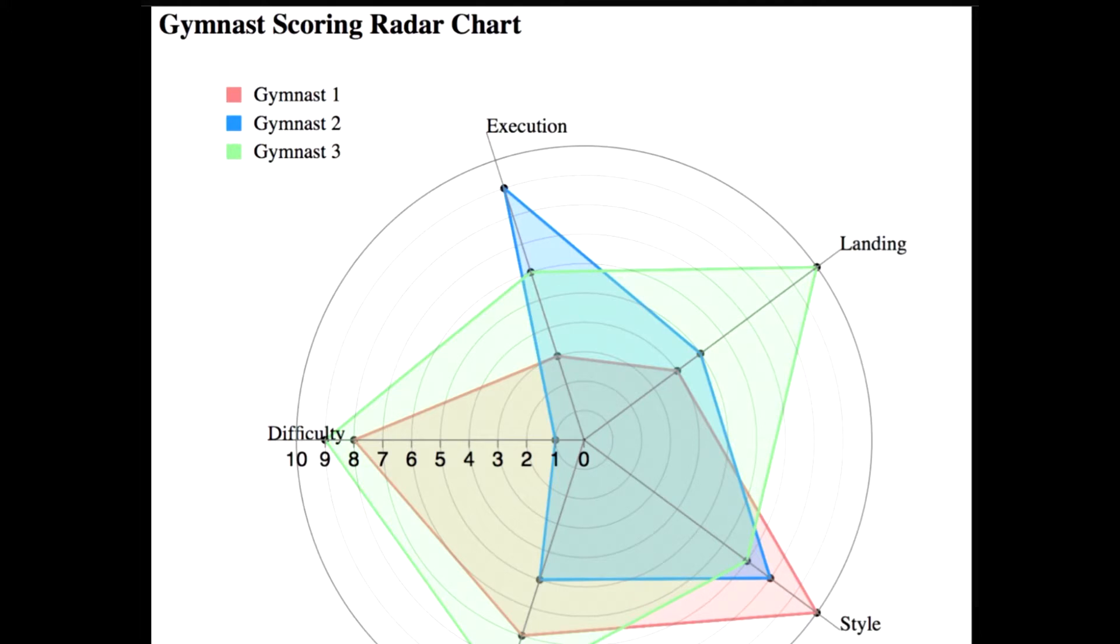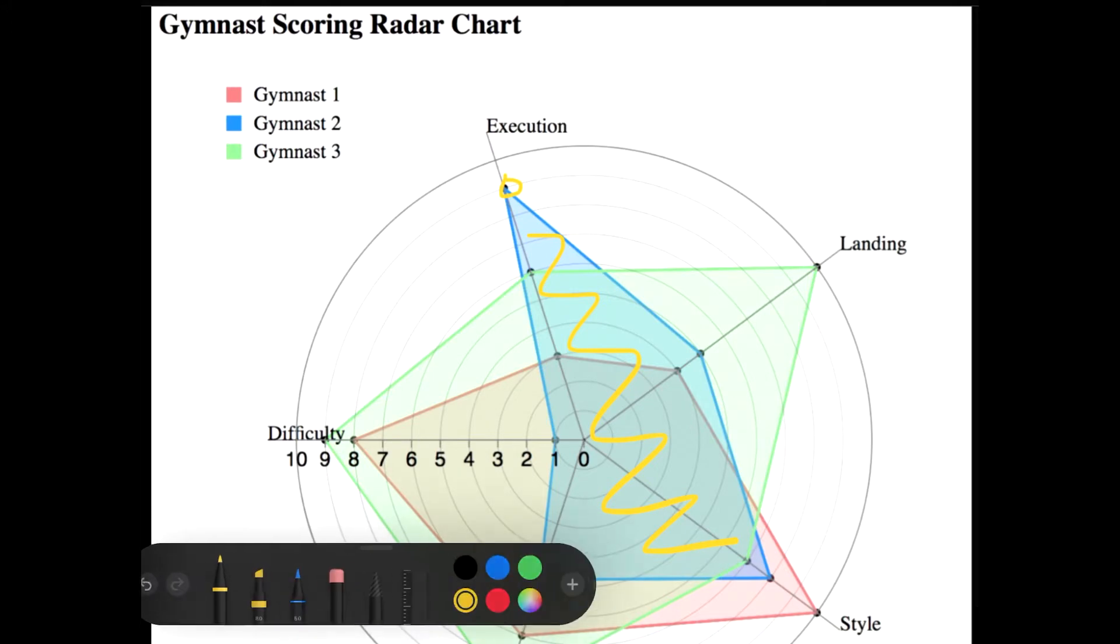We see that three different colors are used to represent the scores of three different gymnasts. How is it a bit different from the previous chart? In the previous chart we just had these particular dots with no complete area inside, but here we see a shaded area for all the three gymnasts.